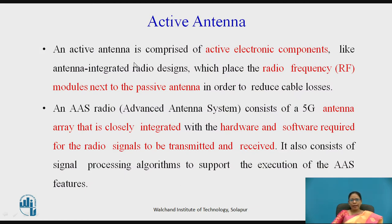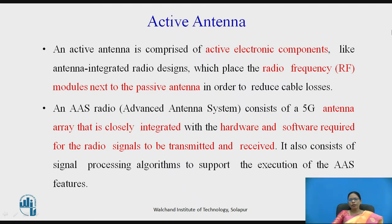An active antenna is comprised of active electronic components like antenna-integrated radio designs, which place the radio frequency (RF) module next to the passive antenna to reduce cable losses. An AAS — Advanced Antenna System — consists of a 5G antenna array closely integrated with the hardware and software required for radio signals to be transmitted and received, along with signal processing algorithms to support AAS features.